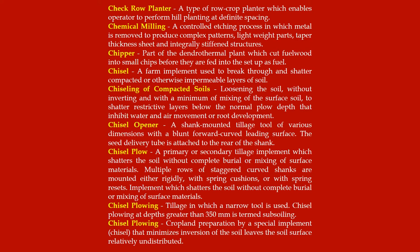Chipper: part of the dendrothermal plant which cuts fuel wood into small chips before they are fed into the setup as fuel. Chisel: a farm implement used to break through and shatter compacted or otherwise impermeable layers of soil. Chiseling of compacted soils: loosening the soil without inverting and with a minimum of mixing of the surface soil, to shatter restrictive layers below the normal plow depth that inhibit water and air movement or root development.